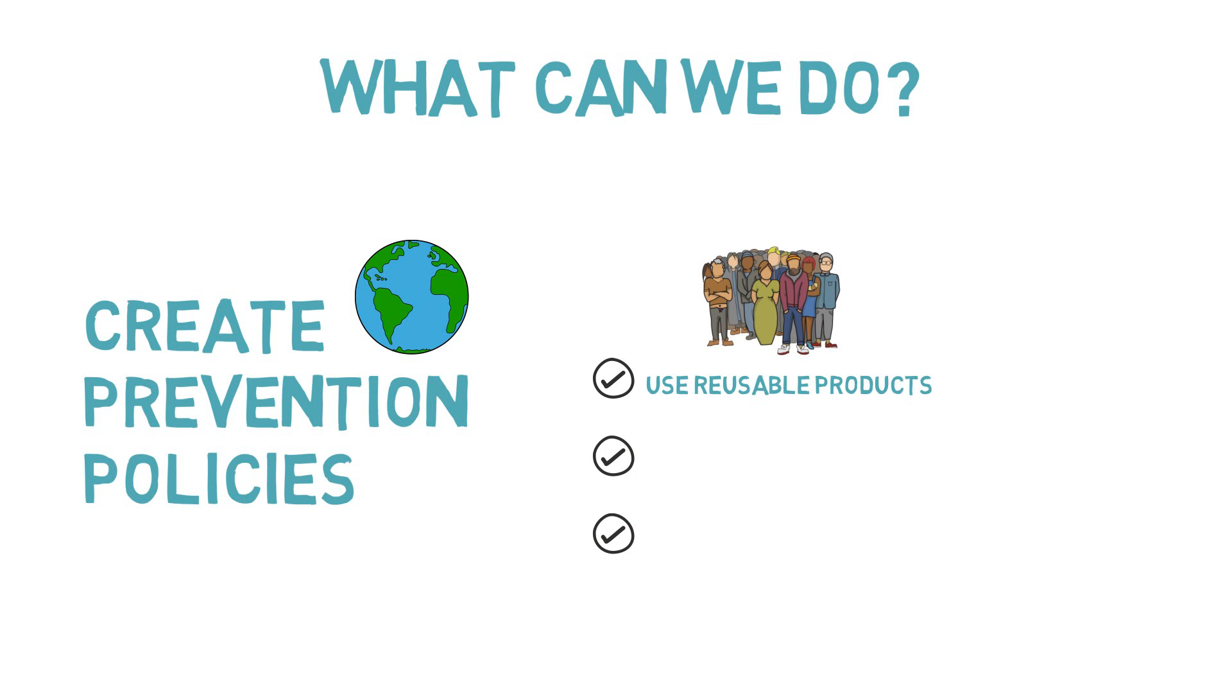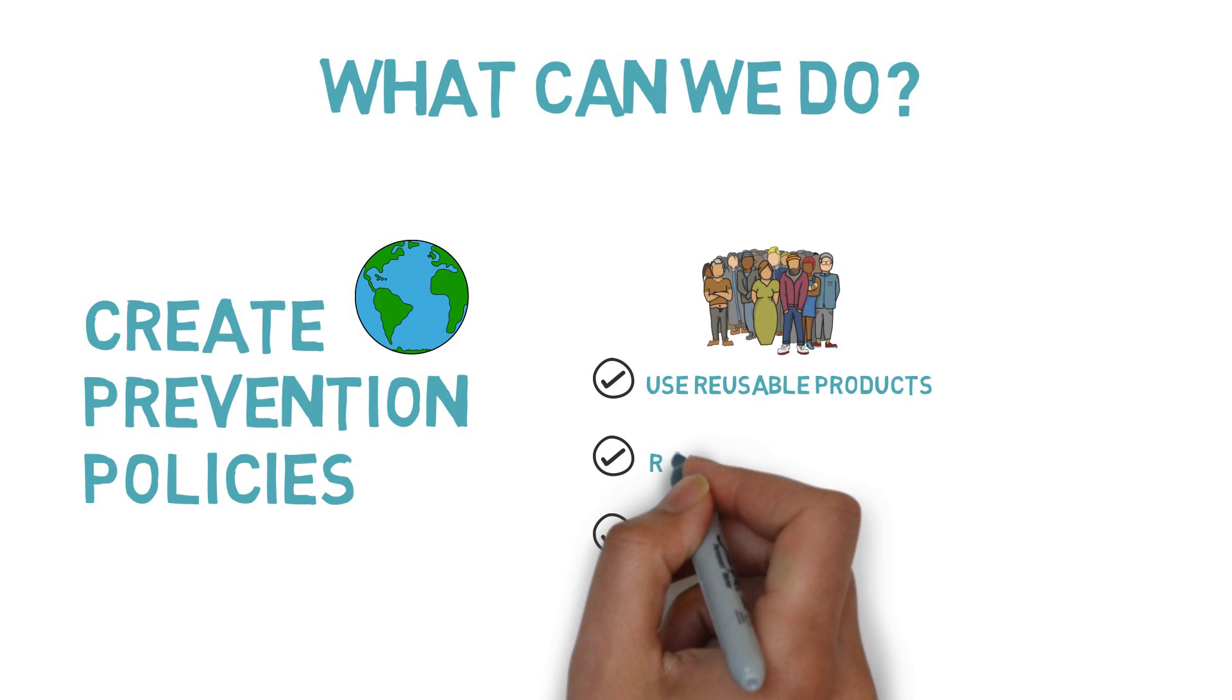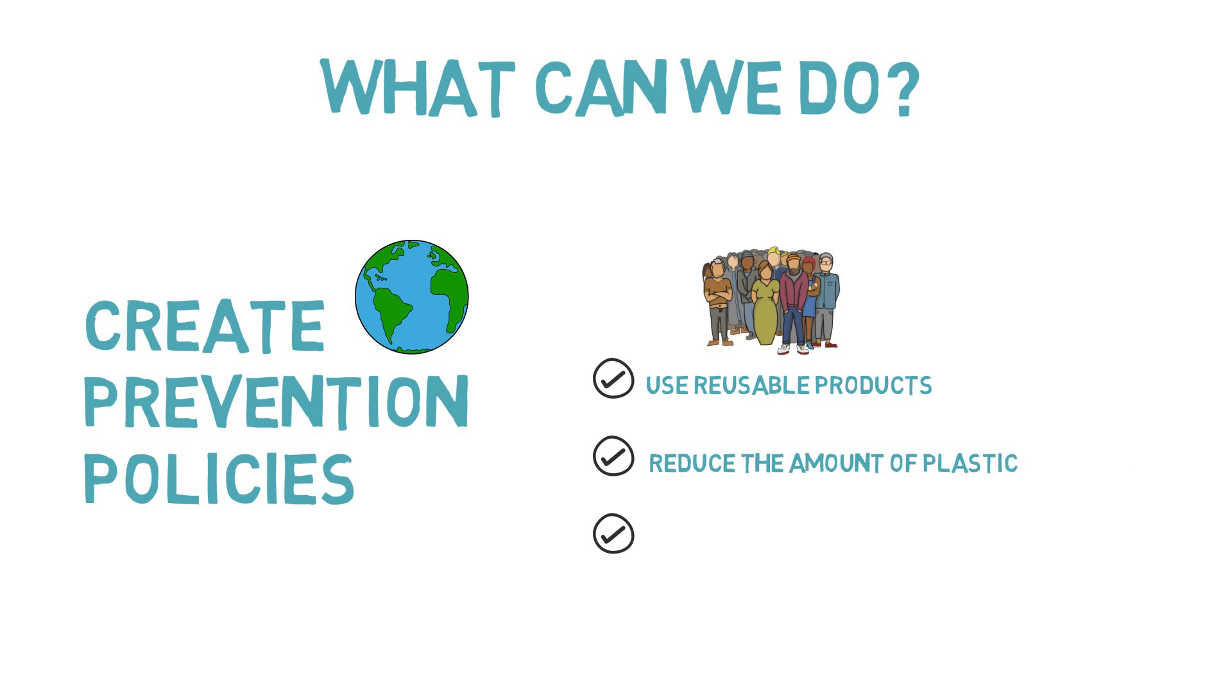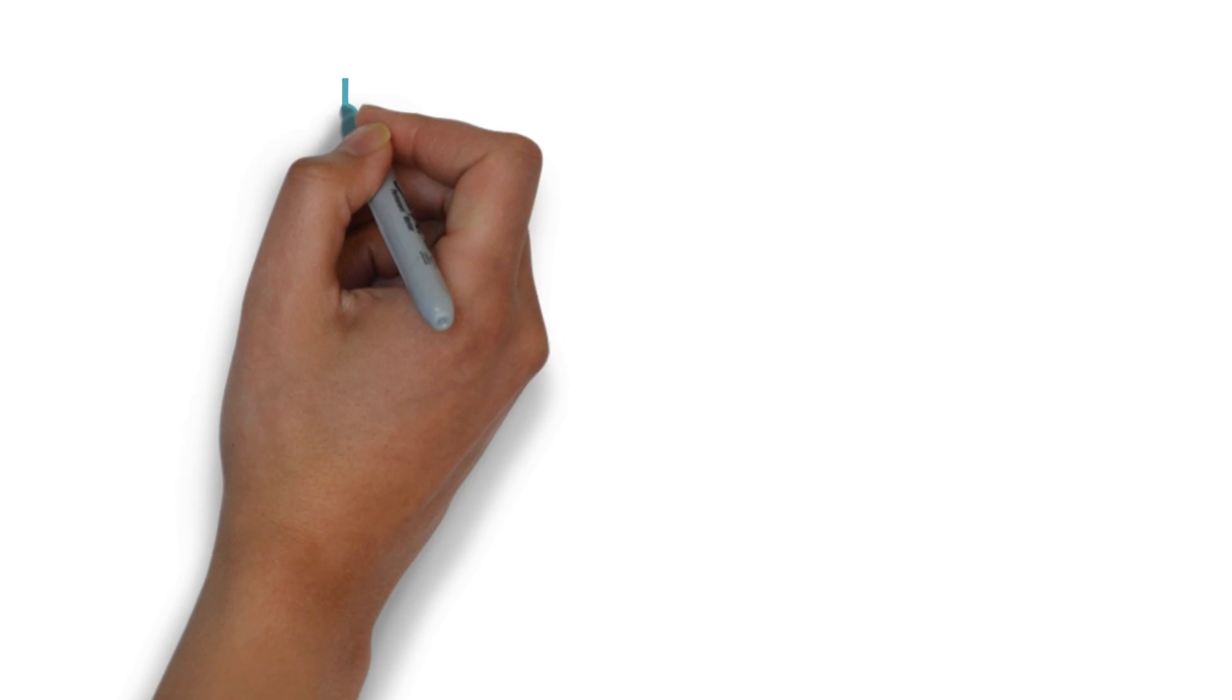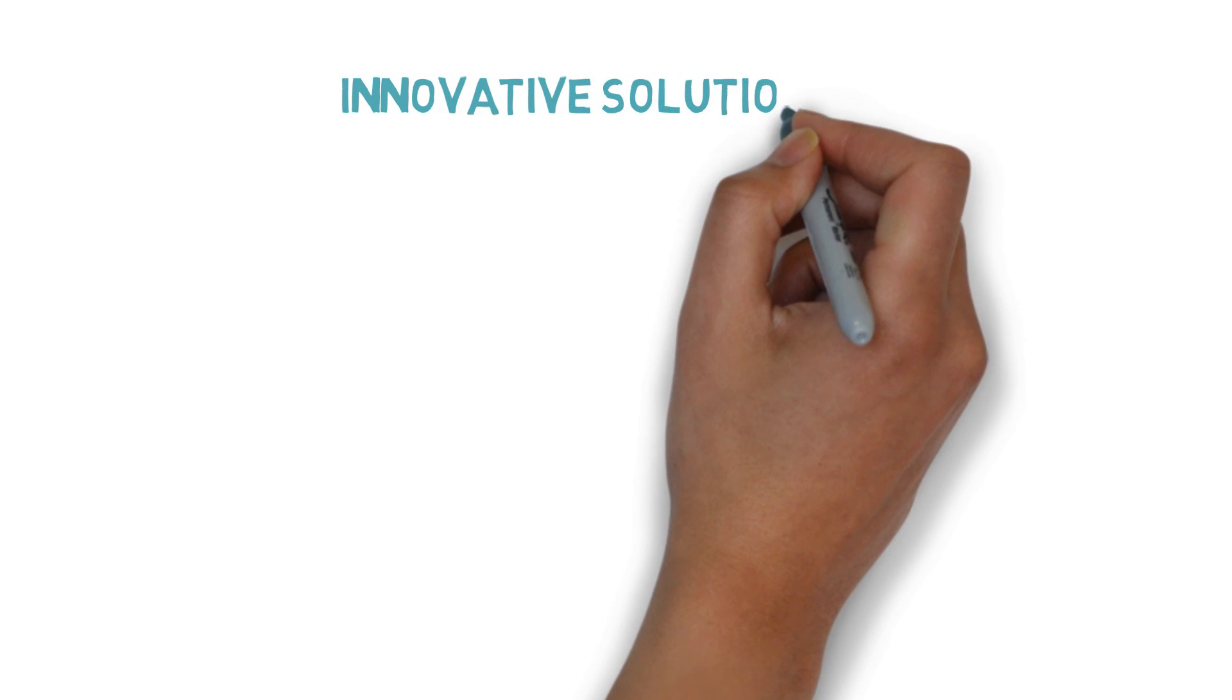Use reusable products, such as cloth bags, when doing shopping. Reduce the amount of plastic, for example by bringing your own mug for coffee. Buy products with little plastic packaging or products made from recycled materials. Even if the problem seems so big,